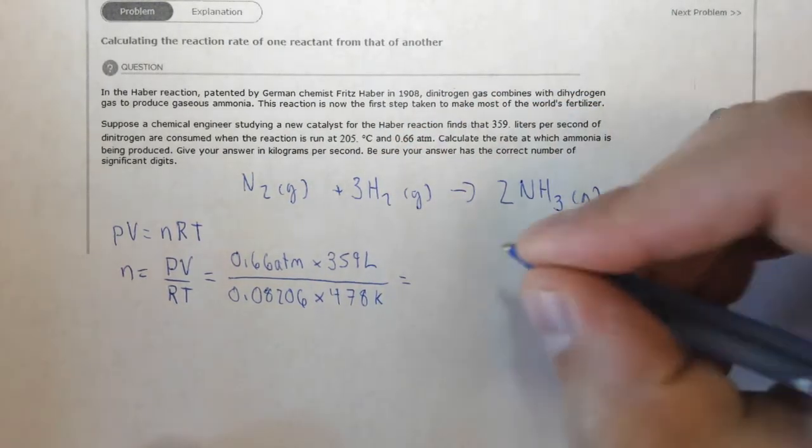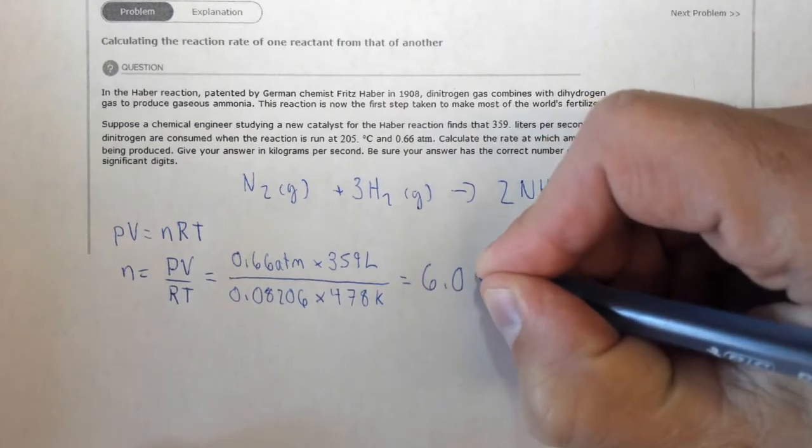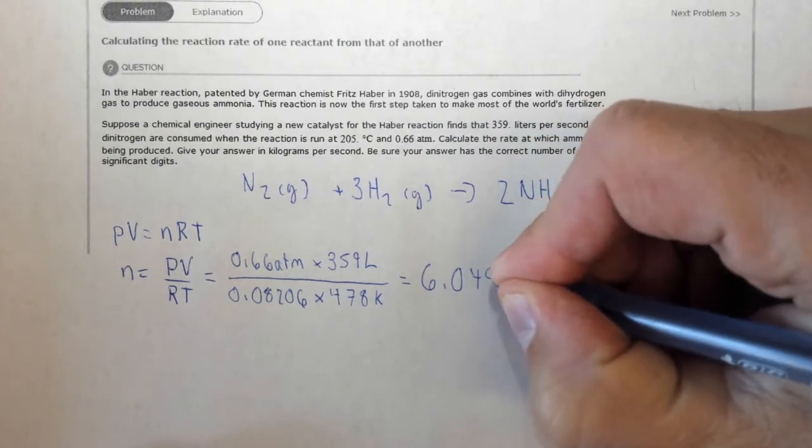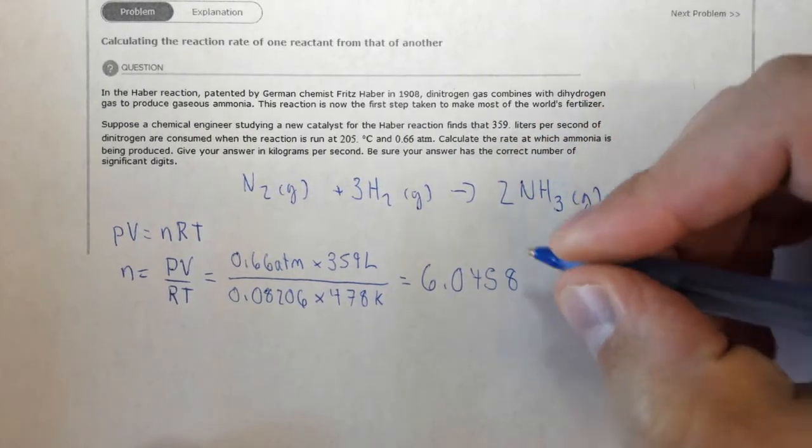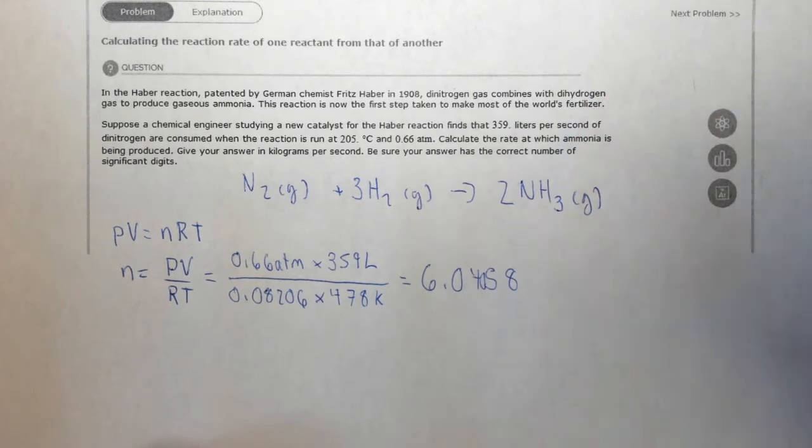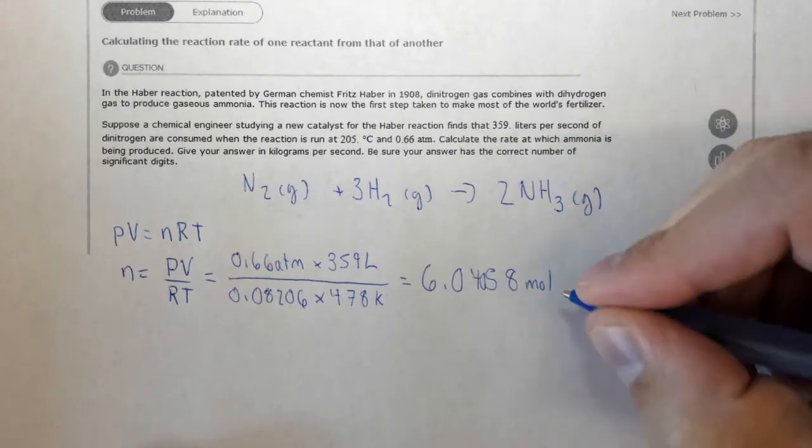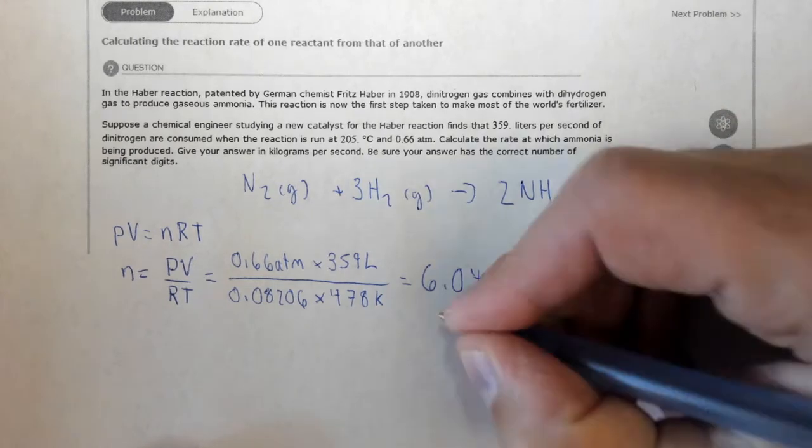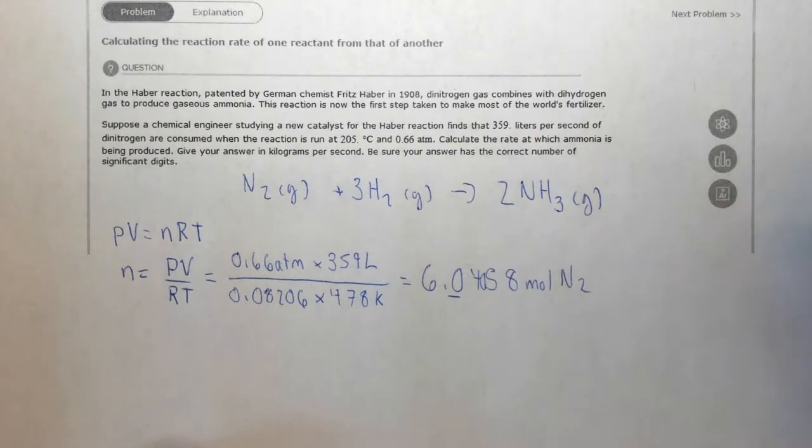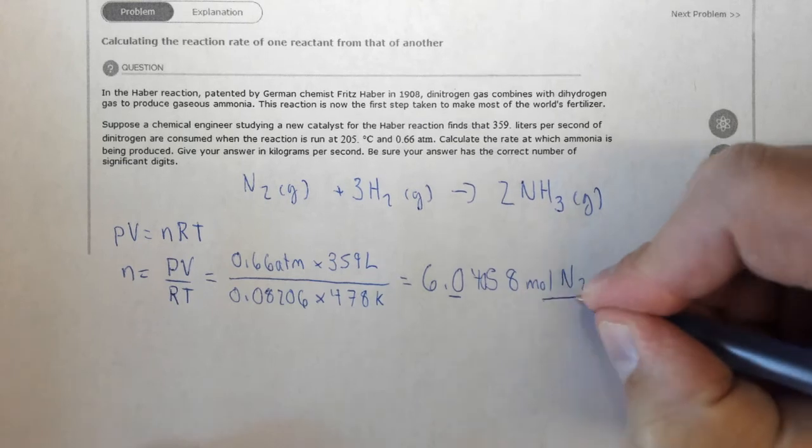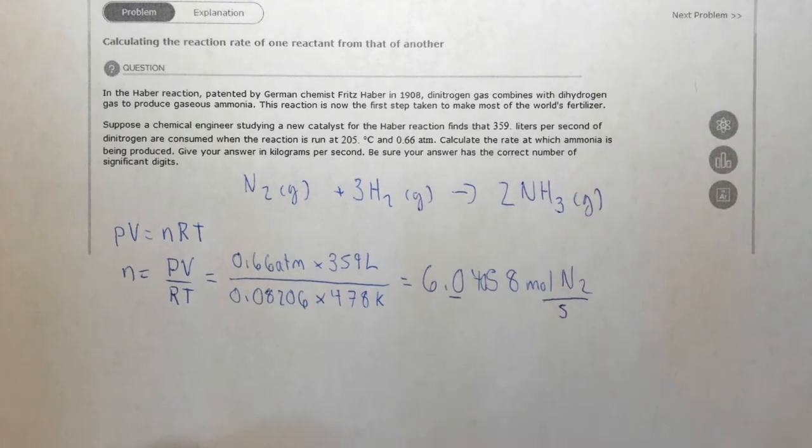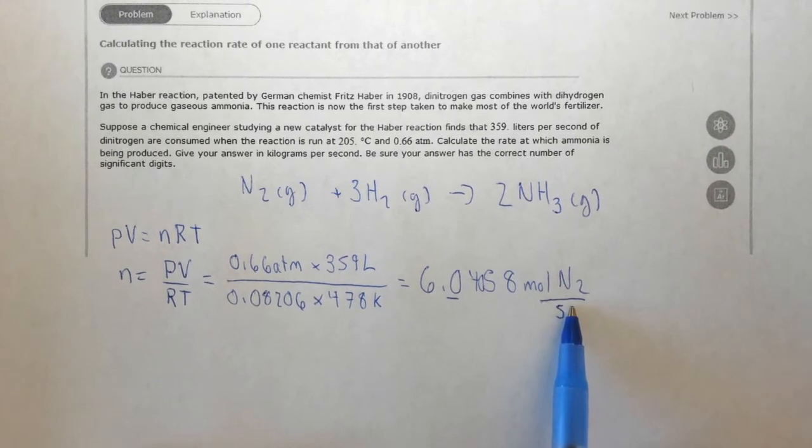When you do all that work, you get 6.0458 moles of nitrogen per second. Note that there's two sig figs because this is two sig figs, and this is technically per second. So this is how many moles are being consumed per second.